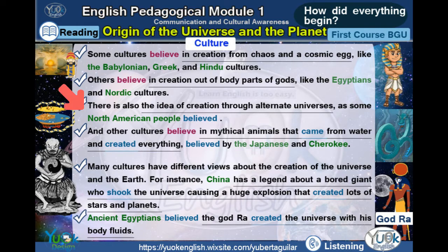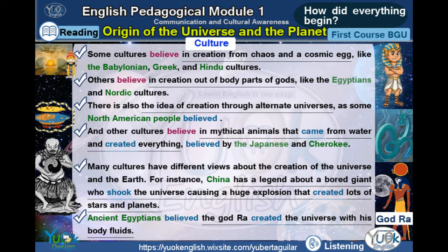There is also the idea of creation through alternate universes, as some North American people believed. And other cultures believe in mythical animals that came from water and created everything, believed by the Japanese and Cherokee.